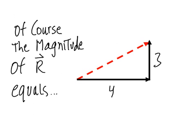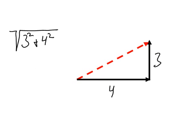Of course, the magnitude of R harpoon equals radical 3 squared plus 4 squared, which becomes radical 9 plus 16...